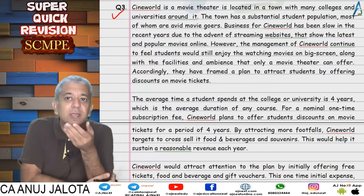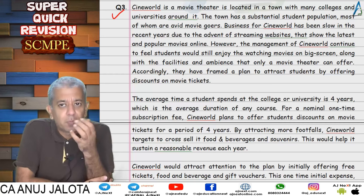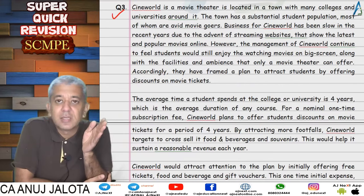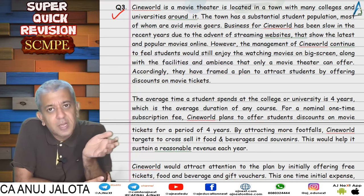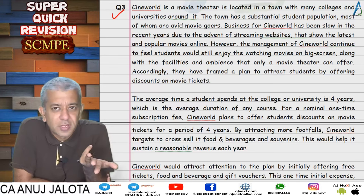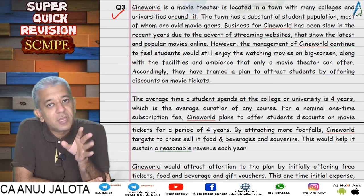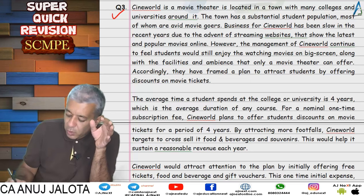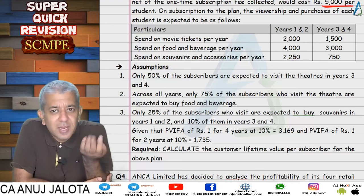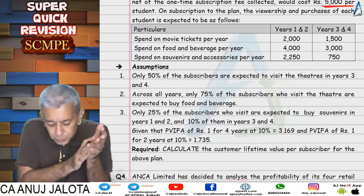Question three is about a theater. This theater is planning to sell some kind of product for a one-time cost of ₹5000. Due to this, students from nearby universities will come to the theater and buy tickets, food and beverages, and souvenirs. We need to find the total present value — PV of inflows minus PV of outflows (₹5000) — which gives us the net present value, i.e., the customer life value. Some probabilities are also given which we must adhere to.